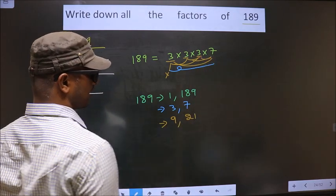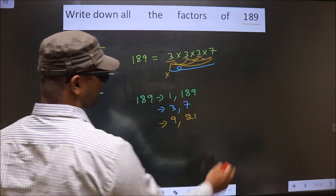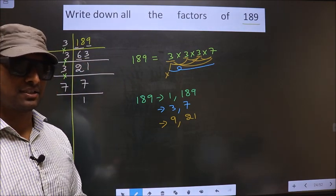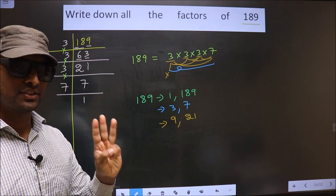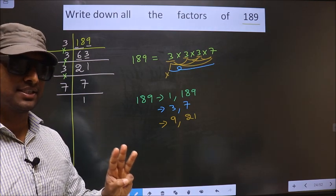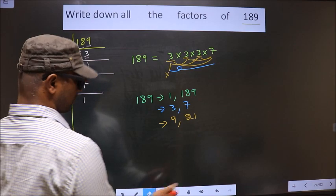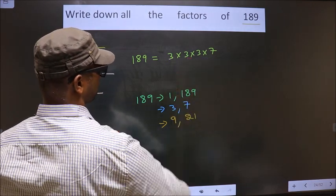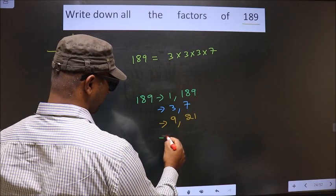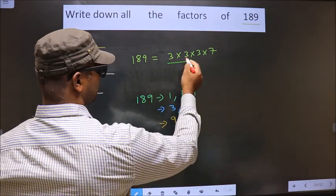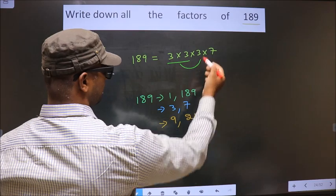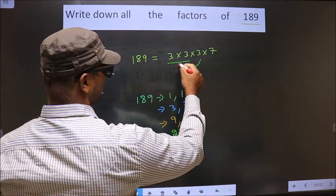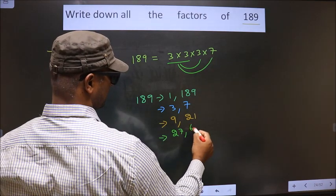Next, take a combination of three numbers. First, I fix two numbers: 3 into 3 is 9. Combine with 3: 9 into 3 is 27. Now combine with 7: 9 into 7 is 63. So no more combinations are possible.